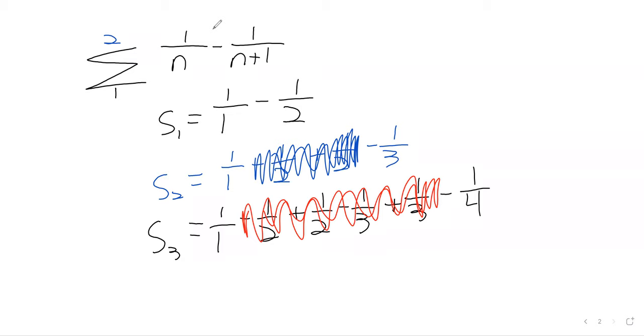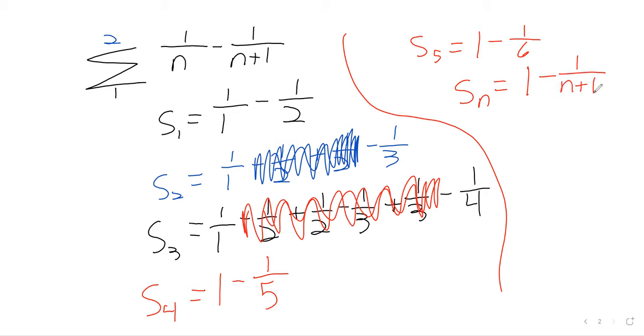And this pattern repeats itself. S sub five is going to be one minus, let's see, S sub four is going to be one minus one over five. S sub five is going to be one minus one over six. S sub n is going to be one minus one over n plus one.